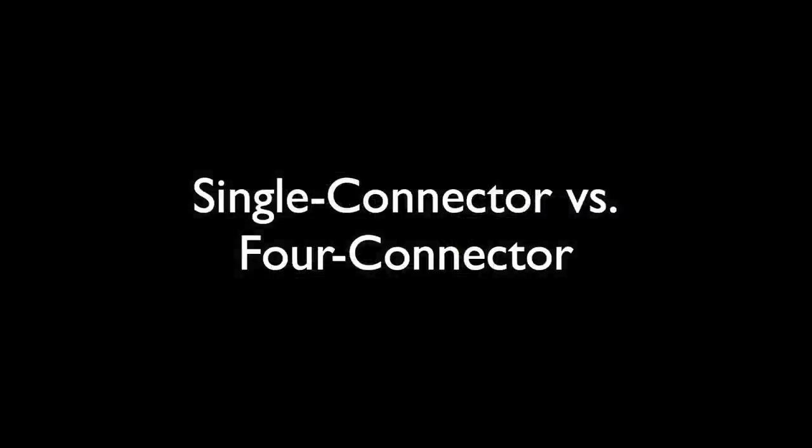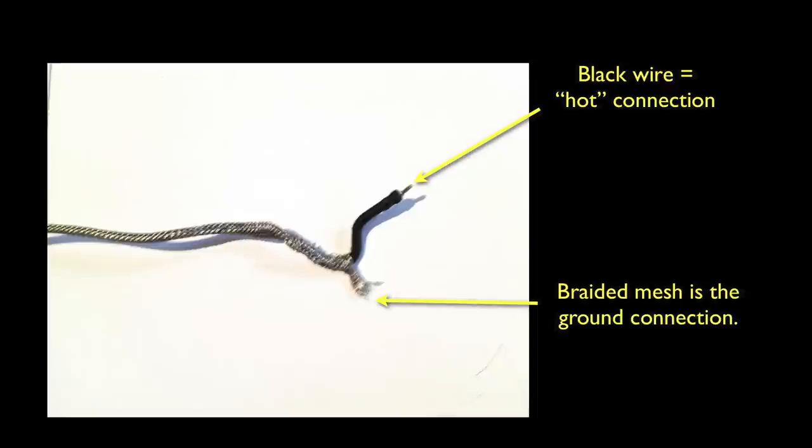Now before we start soldering, a few words about the two types of pickup connections you're likely to encounter. Vintage pickups and vintage style pickups use what's called single connector wire. This type of wire has a meshy outer coating that gets connected to ground, usually by being soldered to the back of one of the pots. There's also an inner wire, usually inside a layer of black insulation, that carries the hot connection. And it usually connects to one of the lugs of your volume pots. The pickup we're removing is this type.